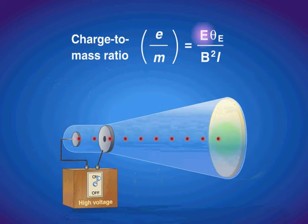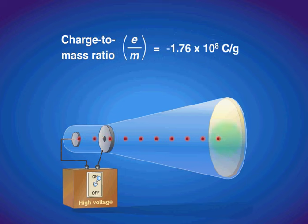Where e is the applied electric field, theta is the angle of deflection, b is the applied magnetic field, and l is the distance traveled by the cathode rays. Thompson determined the charge-to-mass ratio of an electron to be negative 1.76 times 10 to the eighth coulombs per gram.